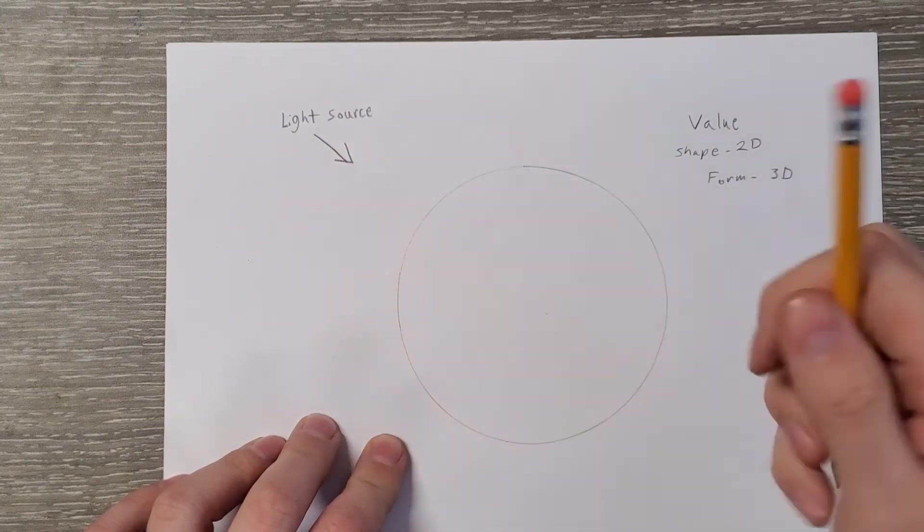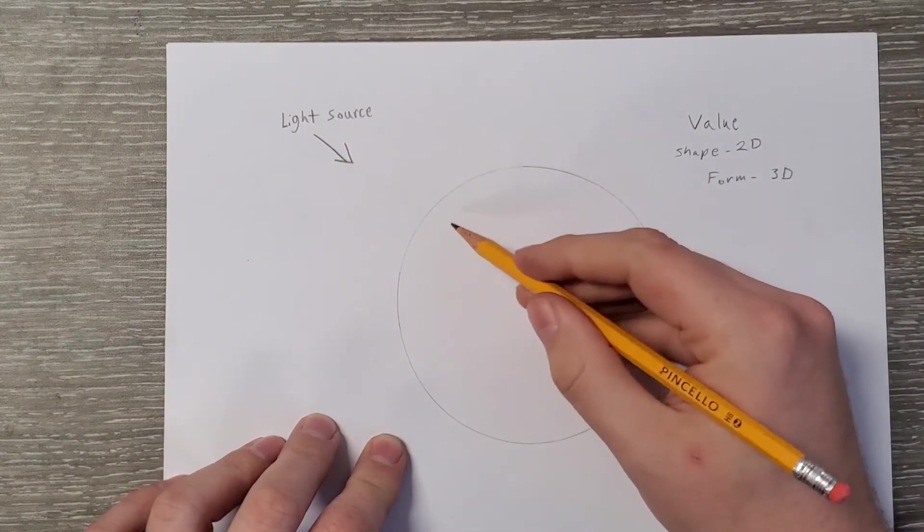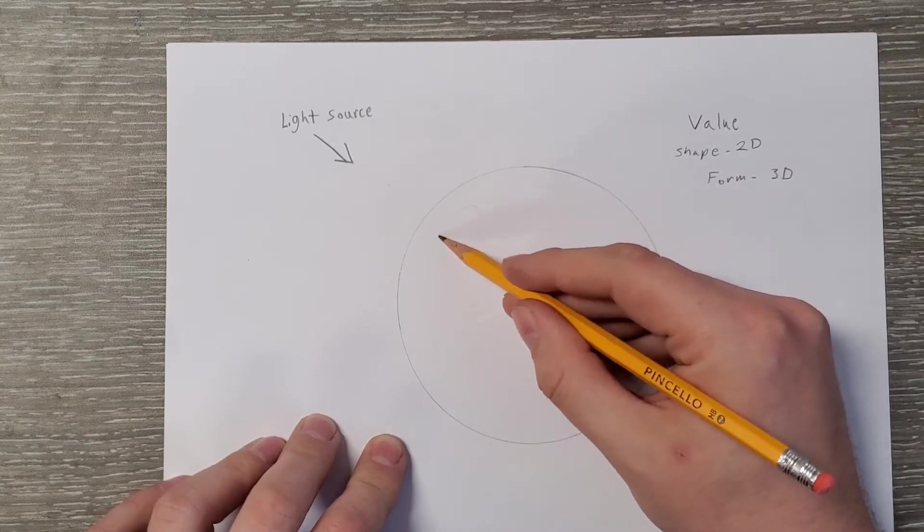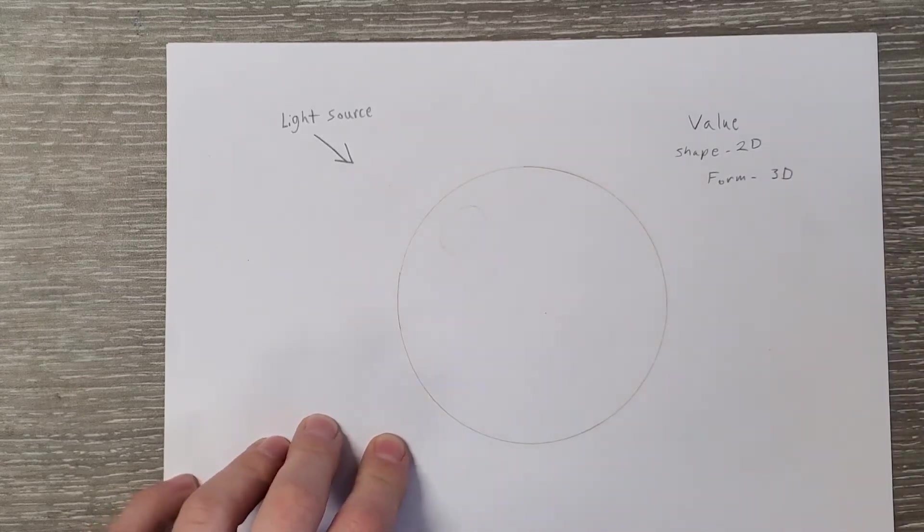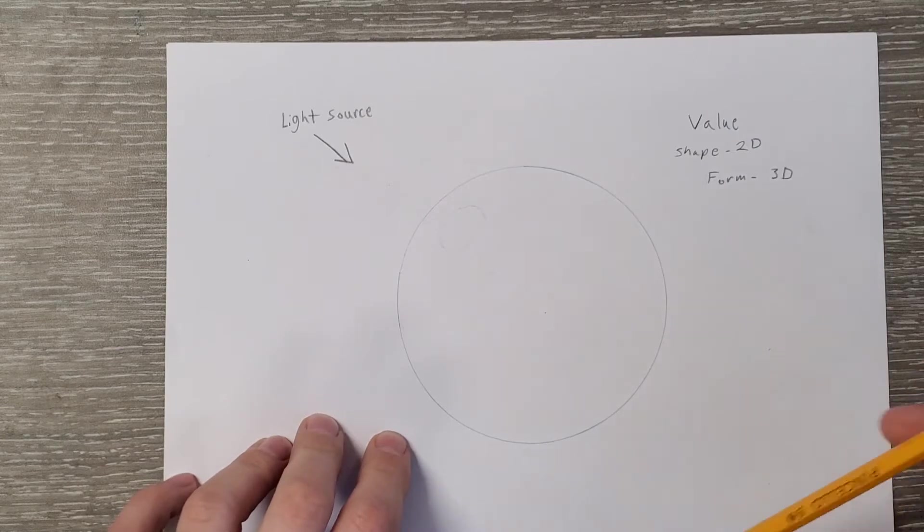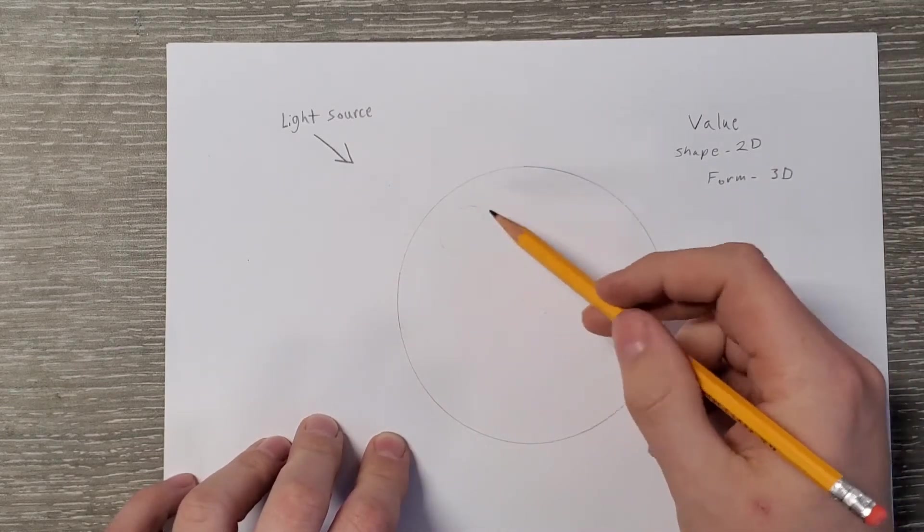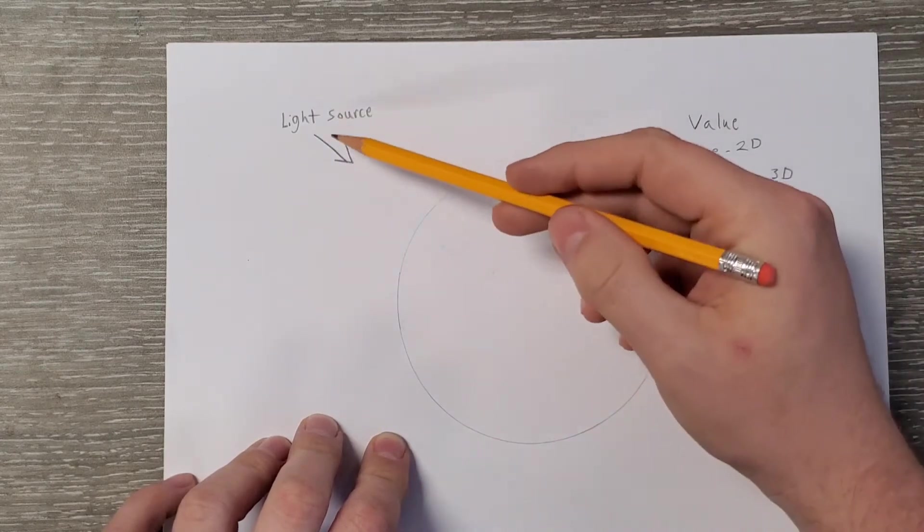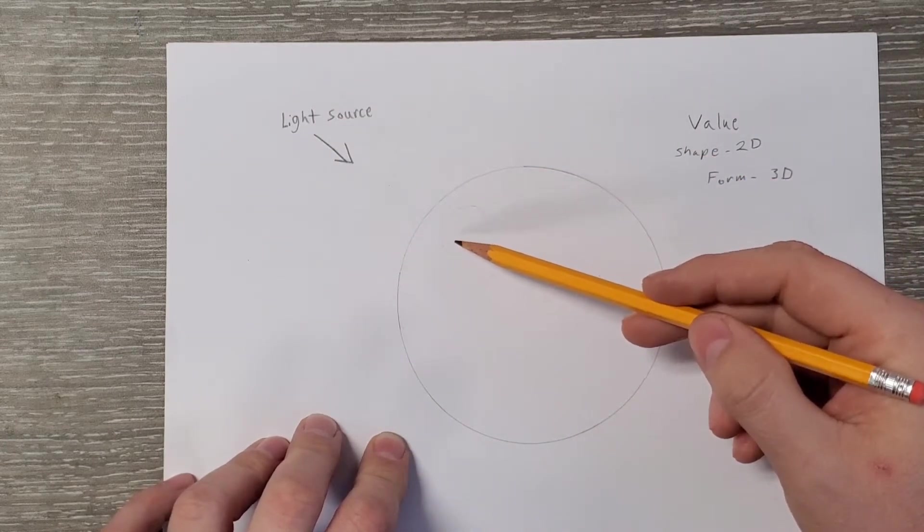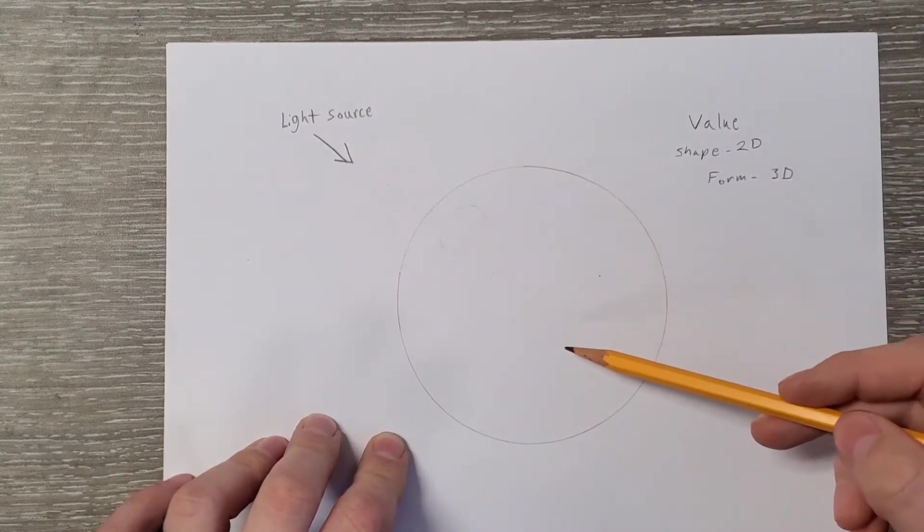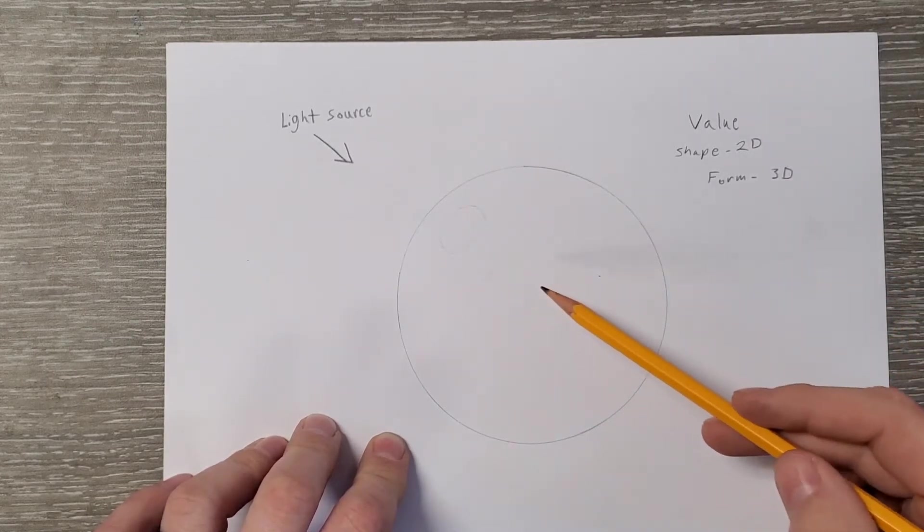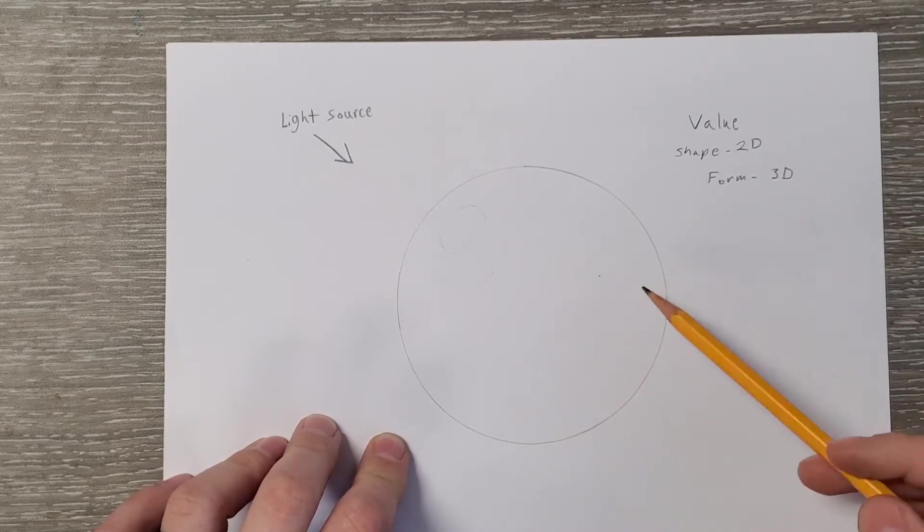So if it hits right here, it's going to create a highlight. So I'm going to very, very lightly trace out my highlight to let me know that's where I want my highlight to be when I'm done. I don't want that line to be there when I'm done though. I want to get rid of that line. And if my light is coming here and it hits right here first and creates a highlight, it's going to slowly wrap around and cause a gradient. So it's going to slowly get darker and darker as it goes as the light is less able to bend around the object.